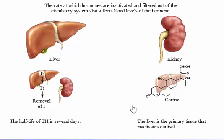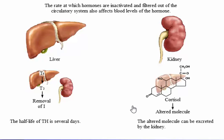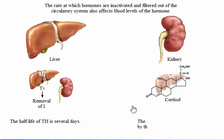Cortisol is a steroid hormone. Humans cannot break down the basic ring structure of steroids; therefore, inactivation depends on altering the molecule. The liver is the primary tissue that inactivates cortisol. As the molecule is altered, it becomes more water-soluble and it no longer binds to its carrier protein. It can then be filtered out of the blood by the kidney and excreted. The half-life of cortisol is about 90 minutes.